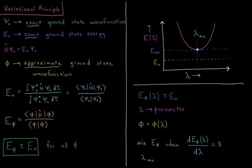This video will discuss the variational principle for computing approximate ground state wave functions. We'll start by defining psi-naught, our exact ground state wave function for a quantum mechanical model system, and E-naught, the exact ground state energy of that system. The Schrödinger equation for this model system is the Hamiltonian operator acting on psi-naught giving E-naught times psi-naught — the standard eigenvalue equation — specified by the kinetic and potential energy operators of all particles in our system.